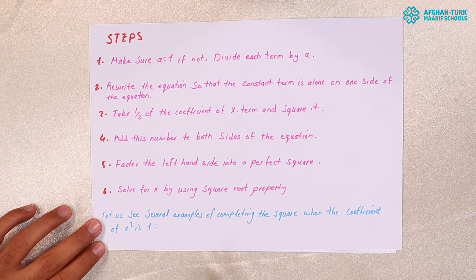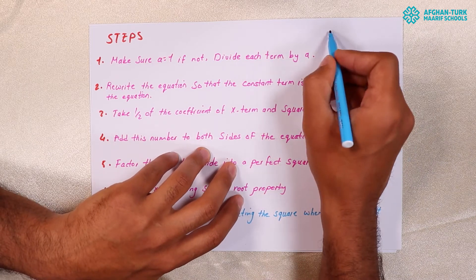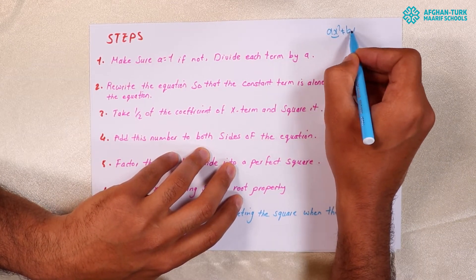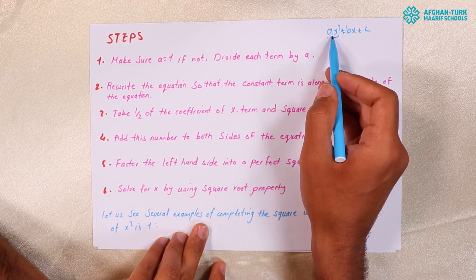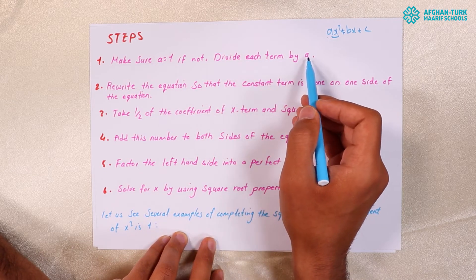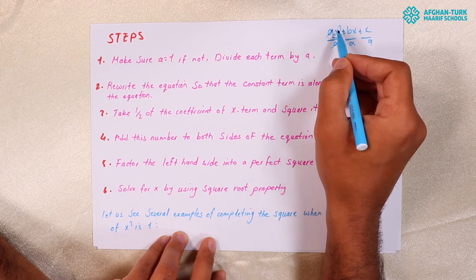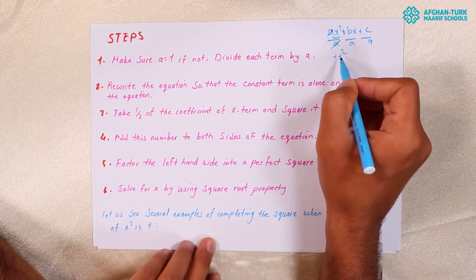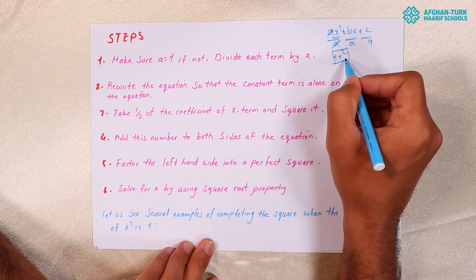In the first step, make sure that A is equal to 1. A is the coefficient of X squared in AX squared plus BX plus C. If A is not 1, divide each term by A. A cancels with A, leaving just 1·X squared. We completely need this kind of coefficient — that is, 1.